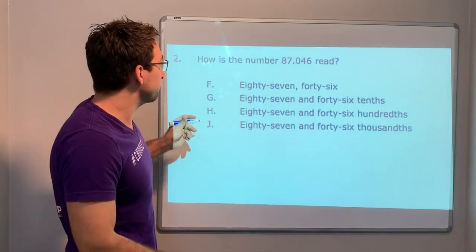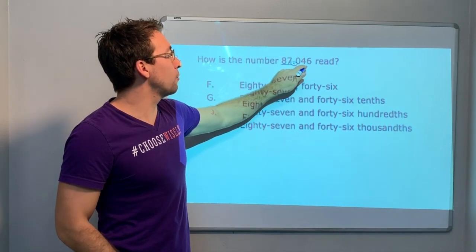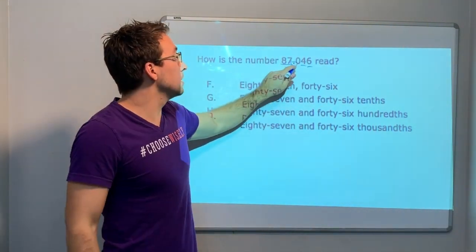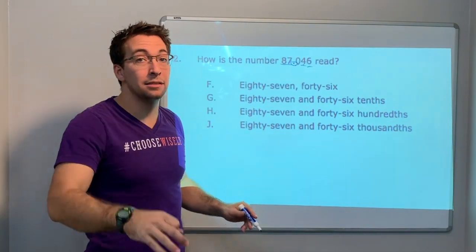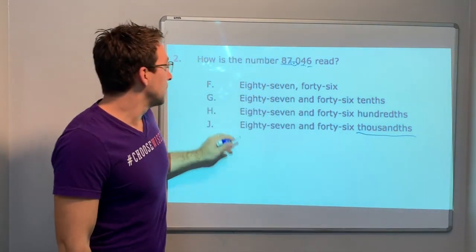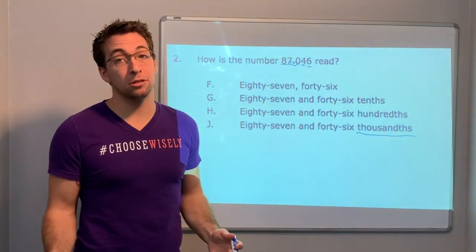How is the number 87.046 read? Notice there's three decimal values: zero, four, six. So there's three places. The third place - it's going to end in the thousandths. Eighty-seven and forty-six thousandths.